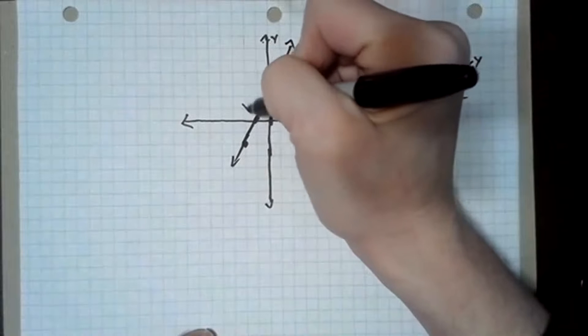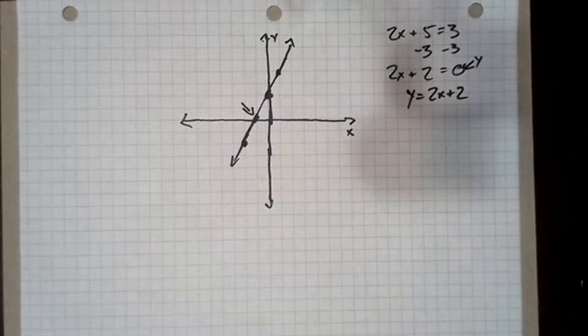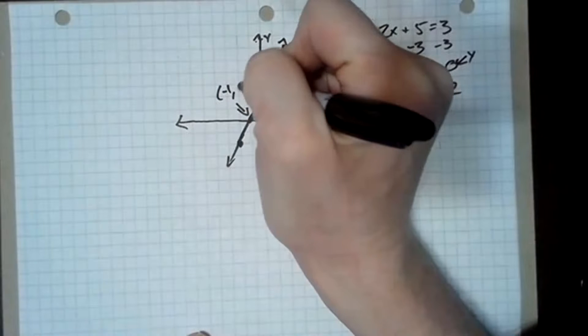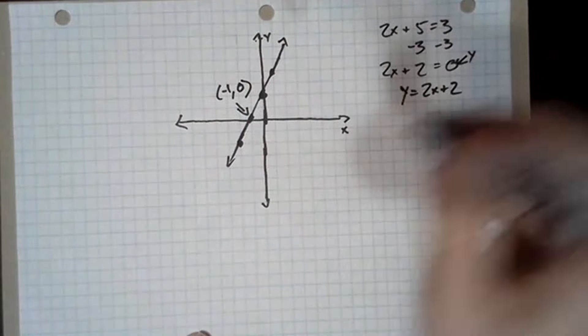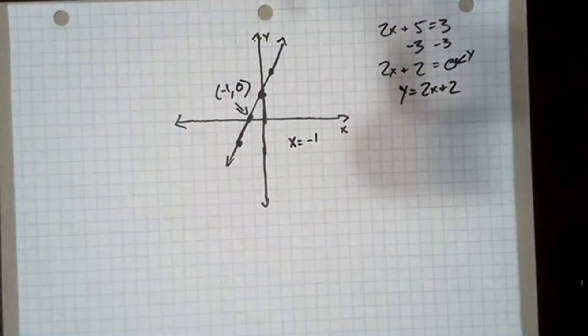Well we know that the solution to the equation is going to be the x value of the x-intercept, that is the point. So negative 1 is the solution.